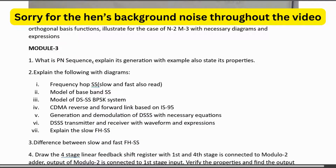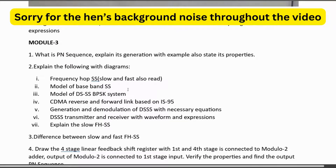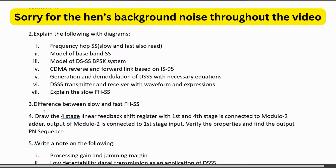In Module 3, explain PN sequence, its generation with example, and its properties — very important. Explain frequency hopping spread spectrum (FH-SS) with neat diagrams, covering both slow hopping and fast hopping. Study the model of baseband SS and DS-SS BPSK system. CDMA based on IS-95 — both the reverse and forward link — is very important. Also important: generation and demodulation of DSSS with necessary equations, the DSSS transmitter and receiver, and slow frequency hopping spread spectrum. The difference between slow and fast FHSS may also be asked.